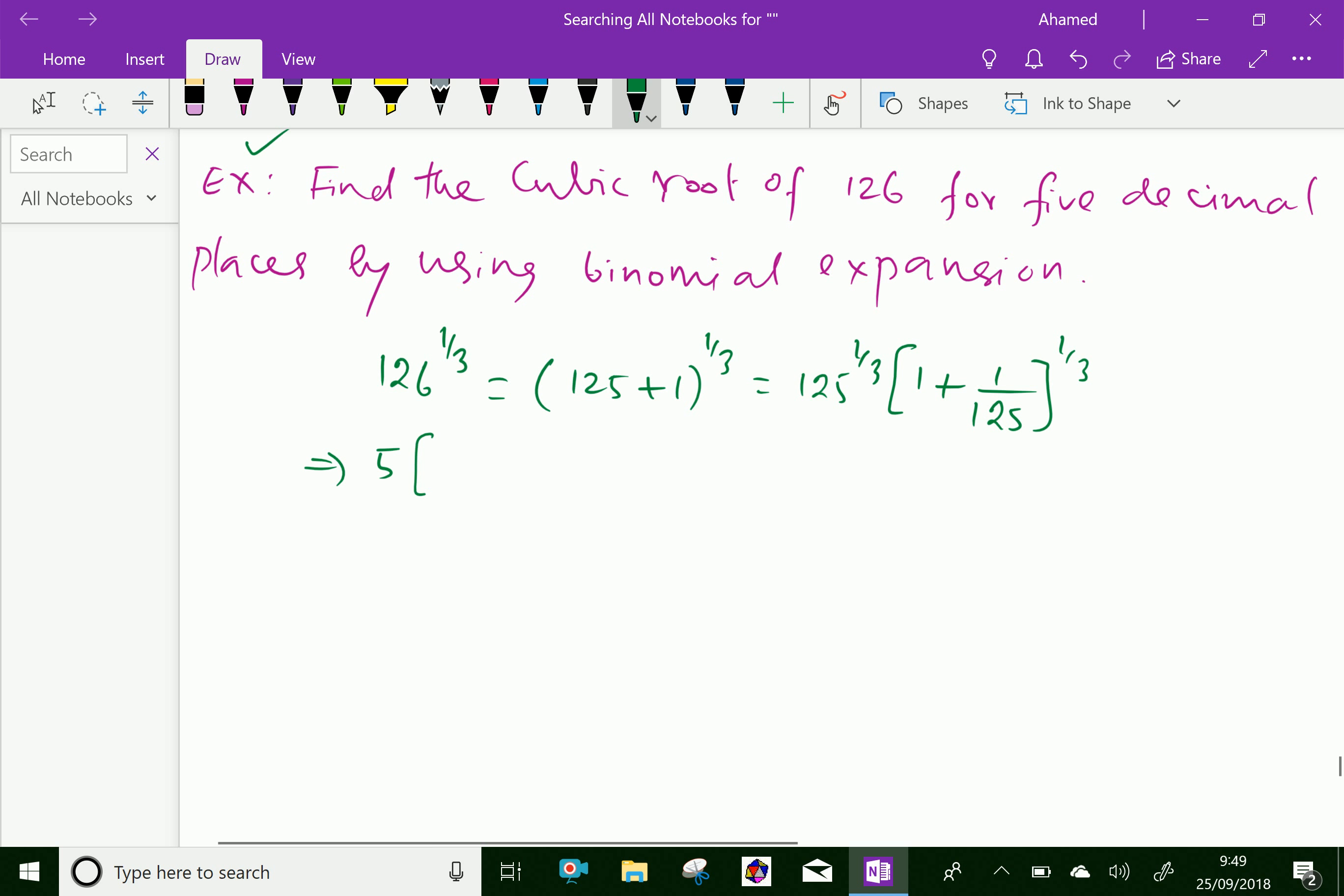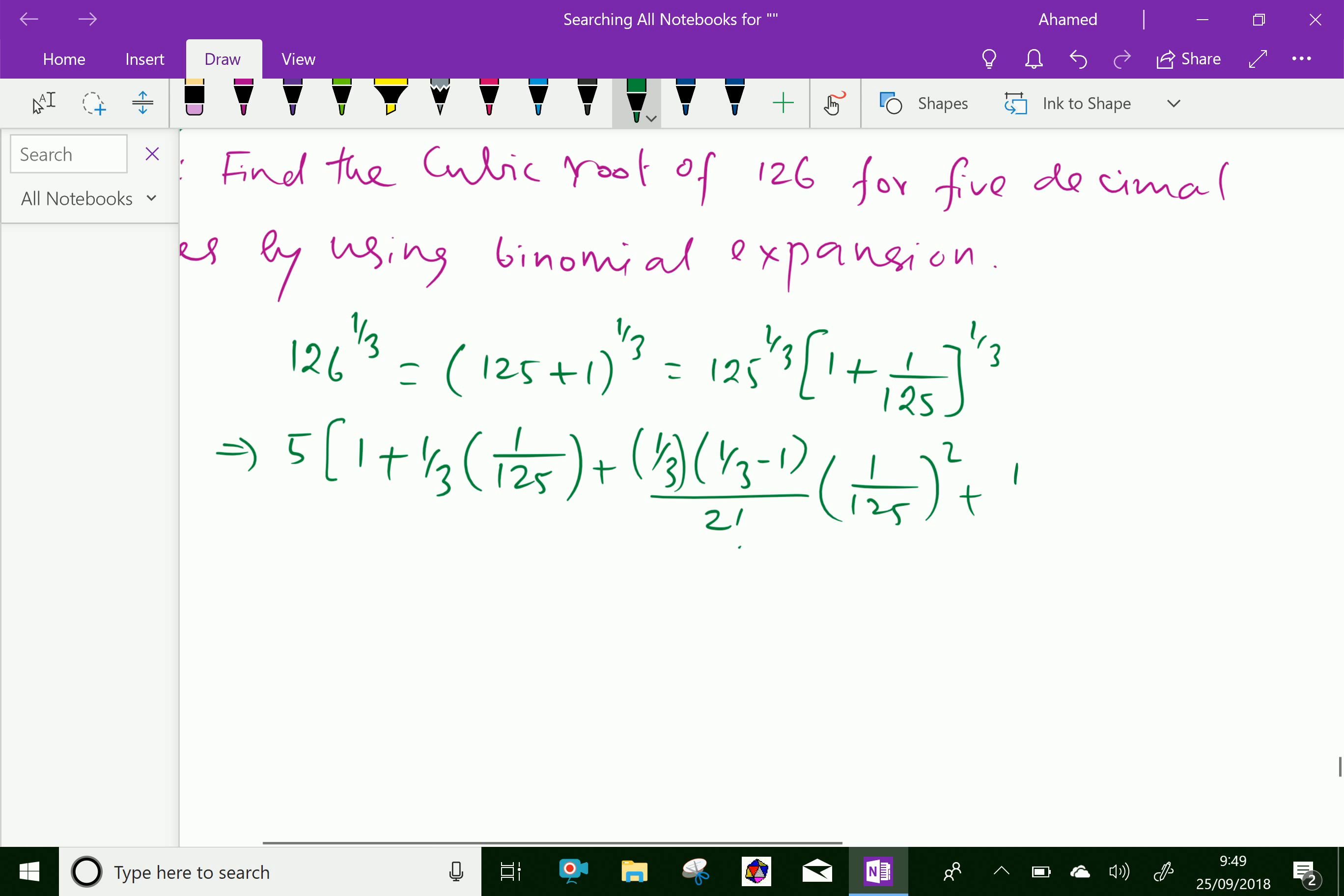Binomial expansion is first 1 plus the power index is 1/3 times 1/125, plus (1/3)(1/3 - 1) over 2 factorial times (1/125) squared.